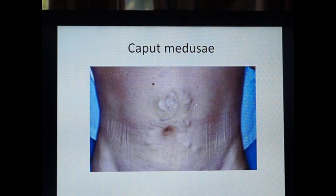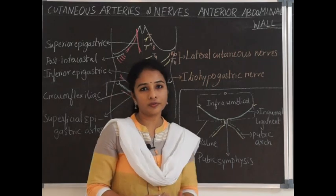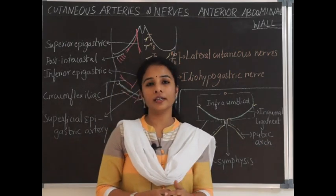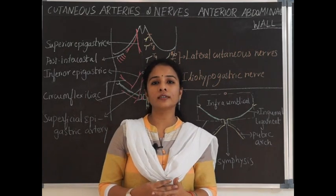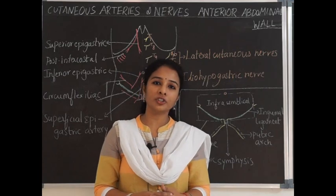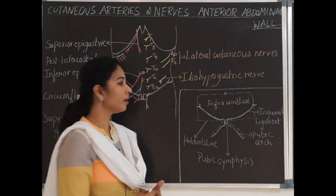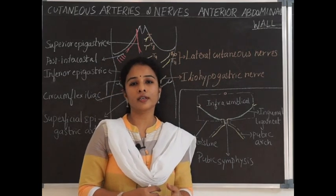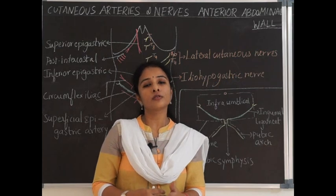Beneath the skin is the superficial fascia. Above the level of the umbilicus, it is present as a single layer. Below the umbilicus, it splits into two layers: the outer fatty layer called the fascia of Camper, and the deeper membranous layer called the fascia of Scarpa. Scarpa's fascia continues as Colles' fascia in the perineum. Due to its attachments, it prevents urine from extravasating posteriorly into the ischioanal fossa or laterally into the thigh during urethral rupture.